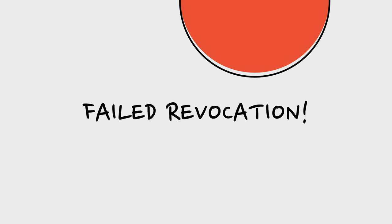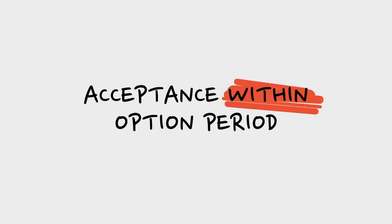You may note that $5 is nominal, but there's an exception to the nominal consideration rule in the context of an option contract — it's fine to have nominal consideration. Now, if Barb tries to accept within the 30-day option period, assuming nothing else has gone awry, that's going to be successful because the option has kept the offer alive and she's accepted during the option period.